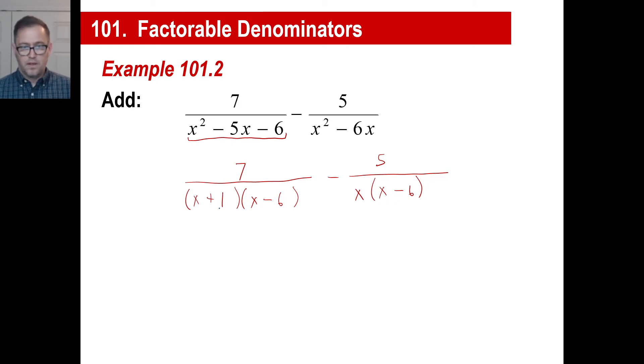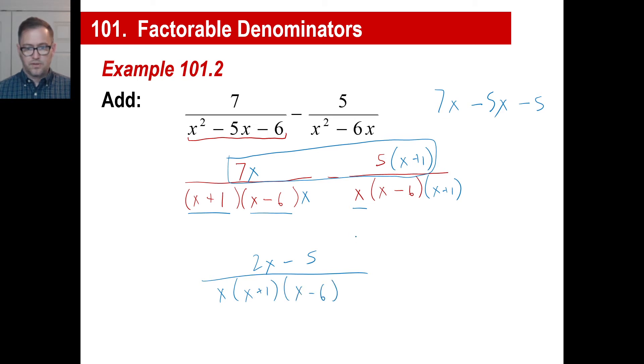It's going to have to be what two numbers multiply, give you negative 6, and add to give you negative 5. Well it's going to be 1 and negative 6. There we go. This one is, I mean you look at this, there's nothing you can do as far as like a trinomial, so you can just pull out the greatest common factor, which is x, and you're left with x minus 6. Now these guys have 1 in common, but the other two factors are not in common. You can tell that. So they have the x minus 6 in common. So what we're going to have to do is we're going to say, well, we're going to need the x plus 1, we're going to need the x minus 6, we're also going to need the x. They're going to have to have all three of those to make them common denominators.